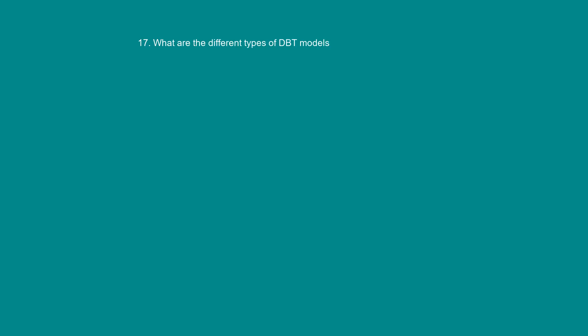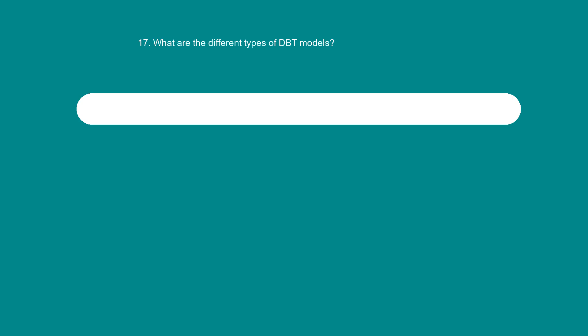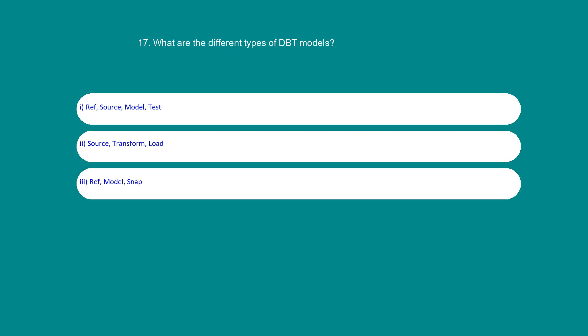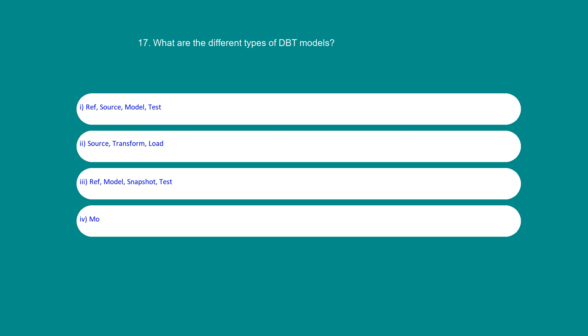What are the different types of dbt models? Option 1: Ref, Source, Model, Test. Option 2: Source, Transform, Load. Option 3: Ref, Model, Snapshot, Test. Option 4: Model, Ref, Test, Source. The answer is 1: Ref, Source, Model, Test.